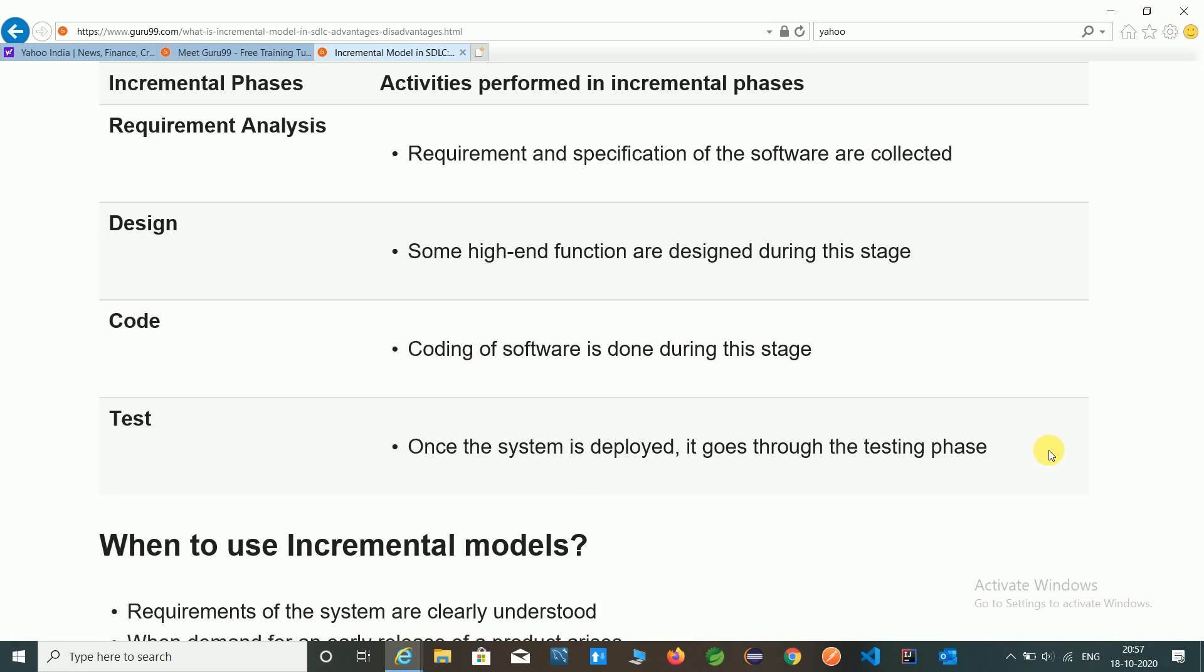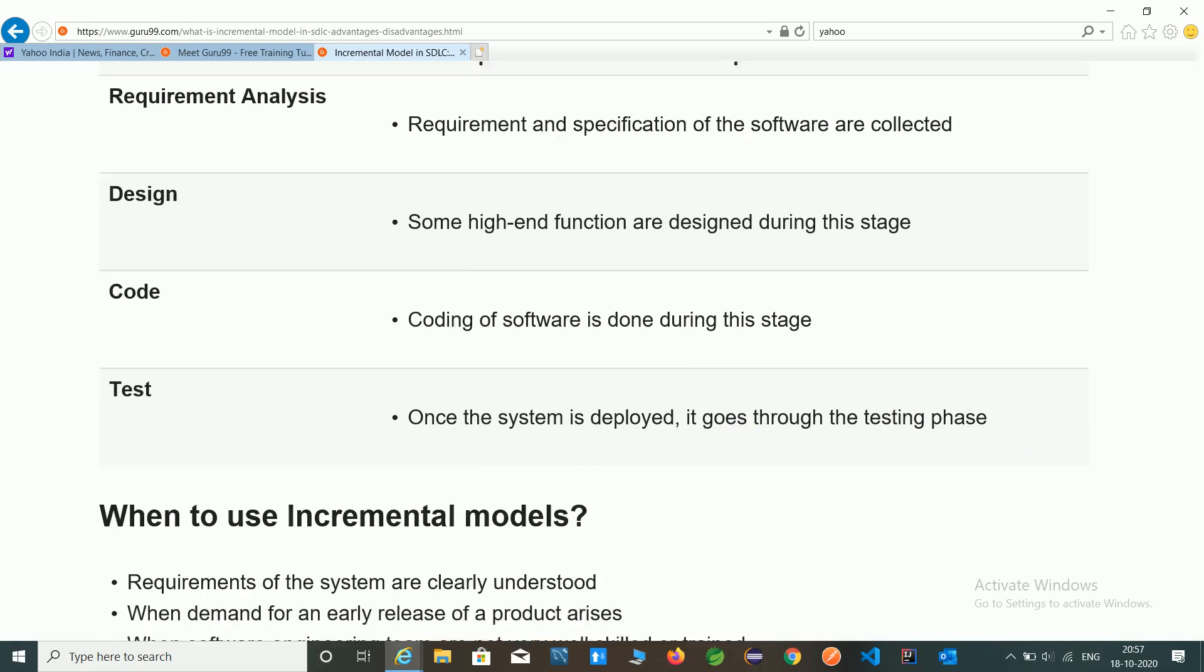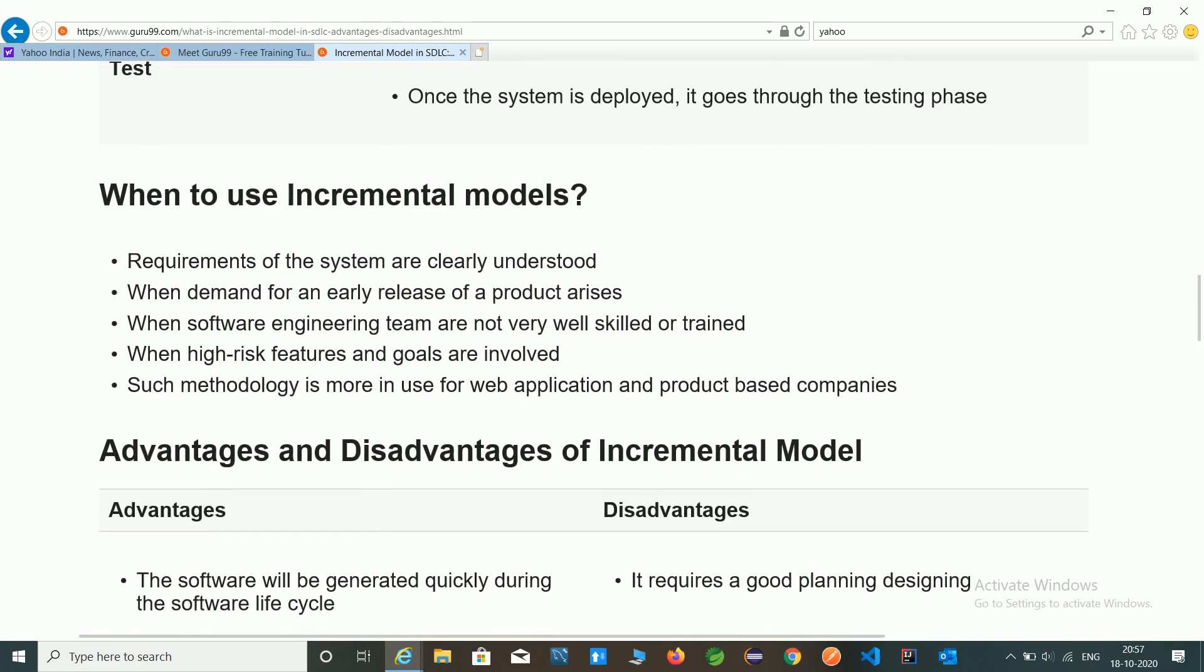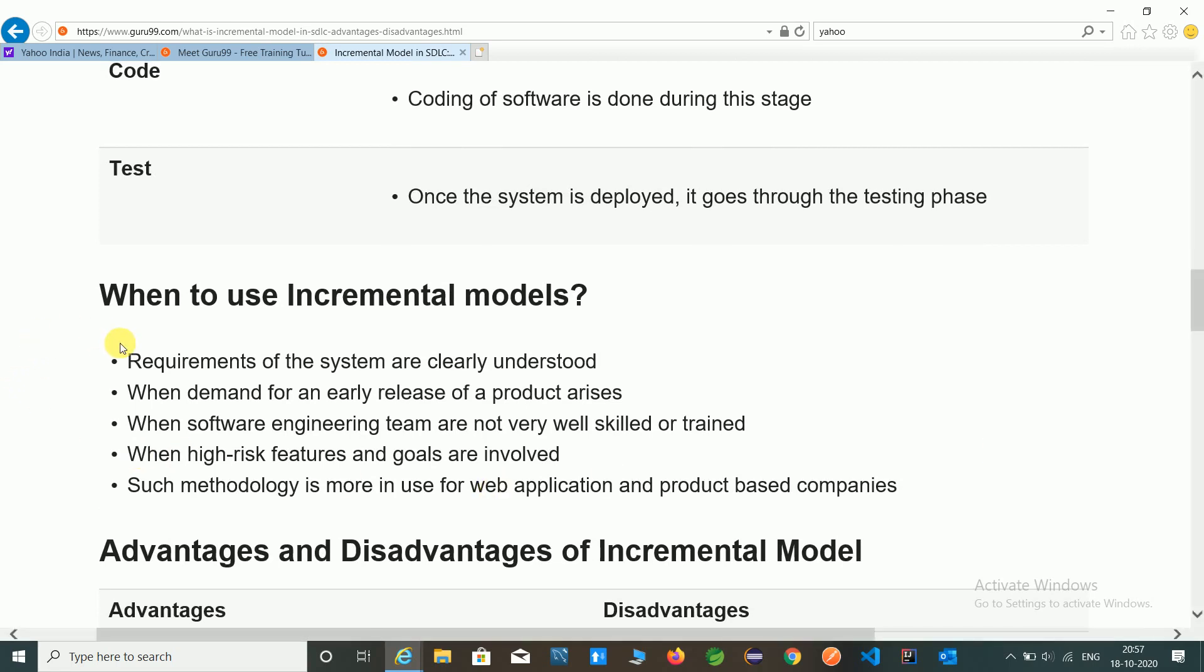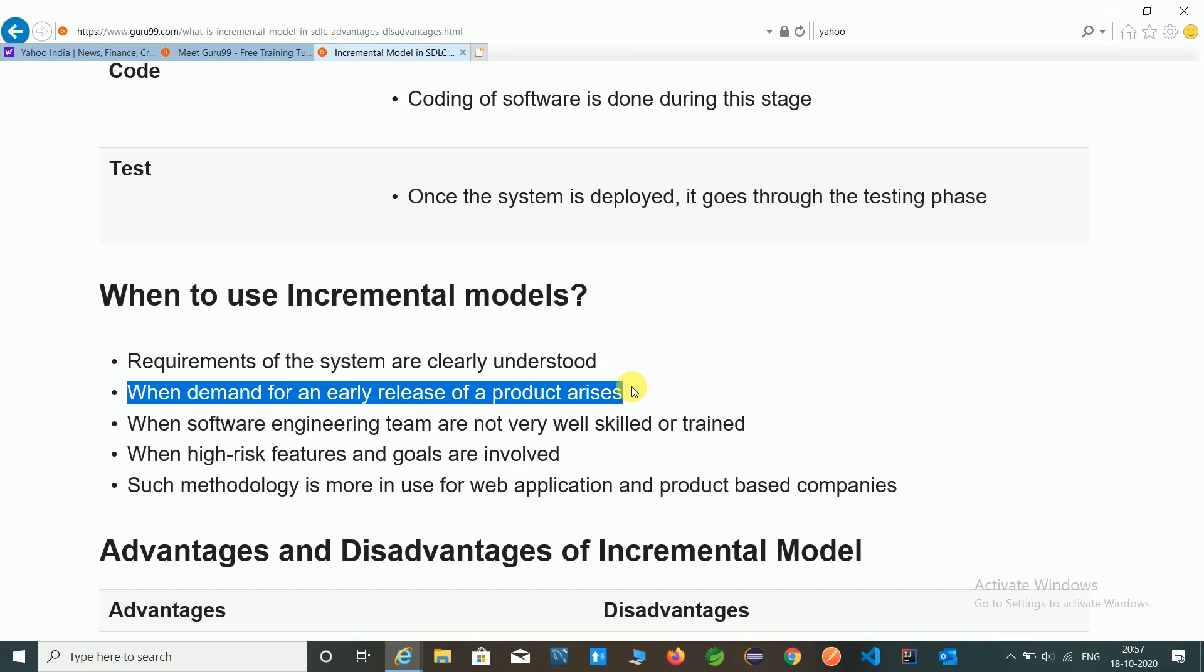These phases are same for every model of SDLC. So when to use incremental model. When requirements of the system are clearly understood. When demands for early release of a product arise. When software engineering teams are not very well skilled or trained. When high risk features and goals are involved.